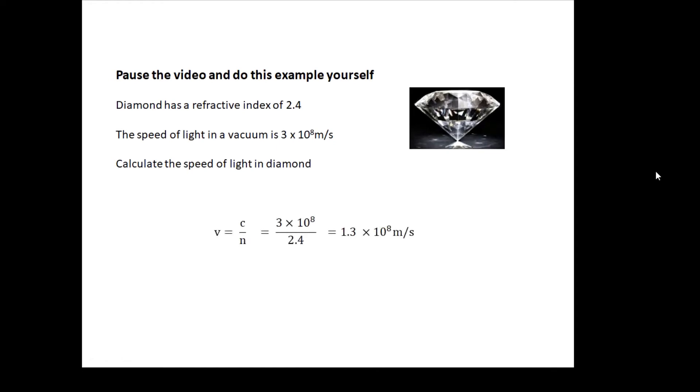And there it is. So v equals c over n, so 3 × 10^8 divided by 2.4 gives us 1.3 × 10^8 meters per second.